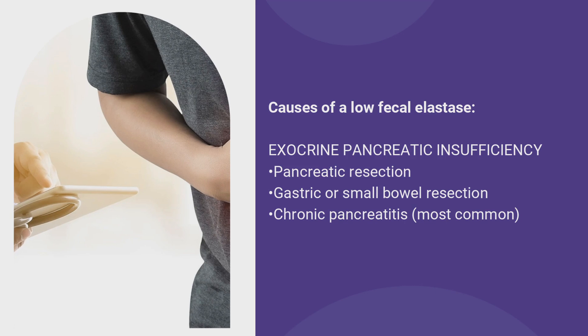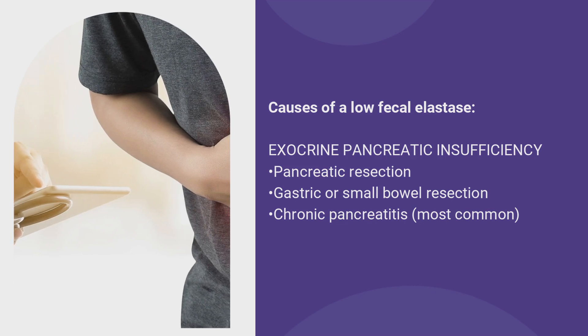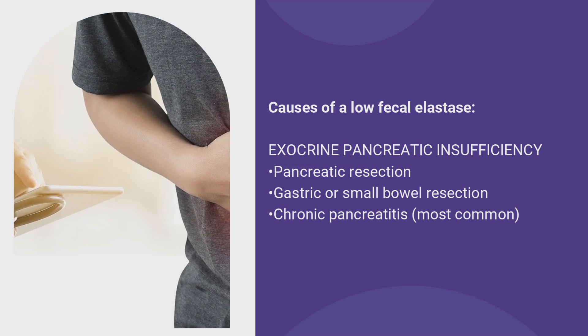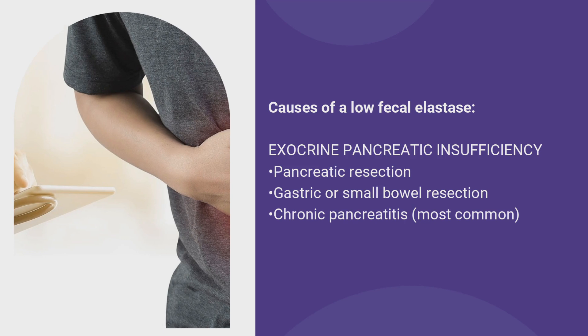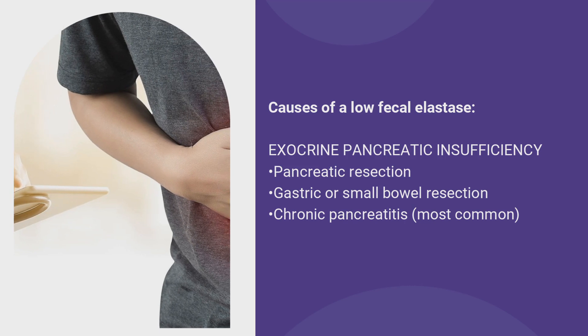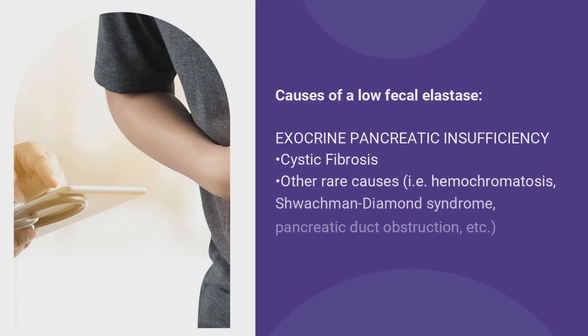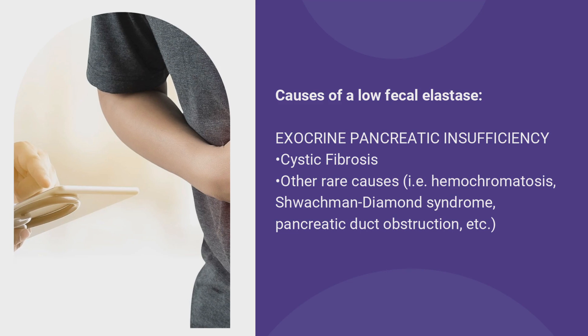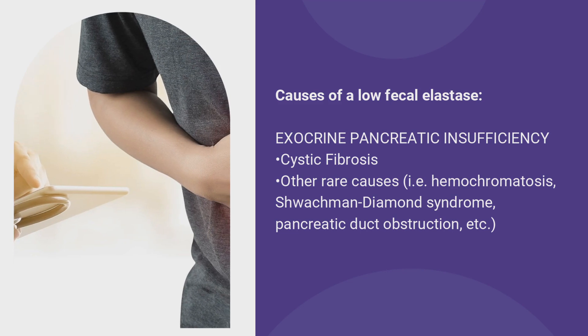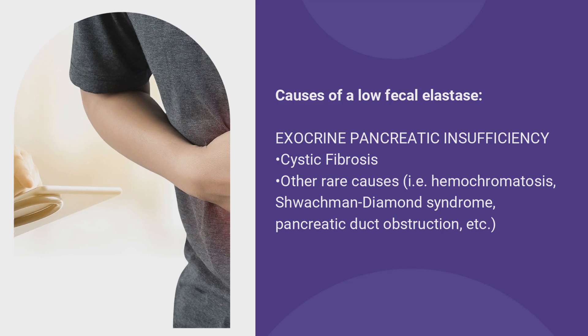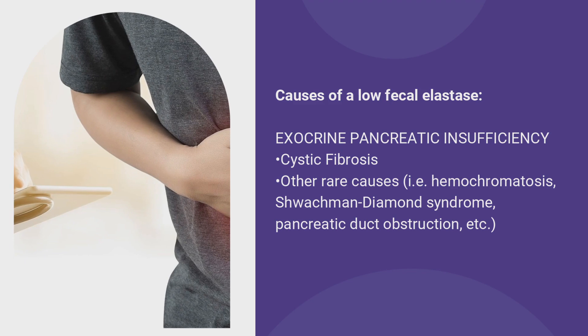There are a number of conditions that can cause pancreatic insufficiency. One cause is pancreatic surgery or resection. The most common cause is chronic pancreatitis, which we often see in gastroenterology. Causes of chronic pancreatitis include gallstones, alcohol, pancreas divisum, and other conditions. We also see exocrine pancreatic insufficiency in cystic fibrosis and hemochromatosis, as well as some genetic and other rare causes. The most common cause overall remains chronic pancreatitis.